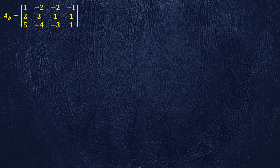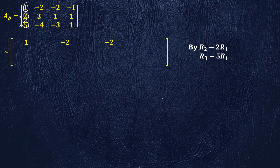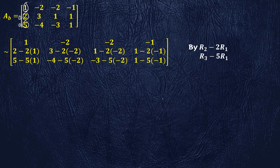We apply elementary row operations to convert the augmented matrix into echelon form. We note that the first non-zero element in the first row is 1. We transform the elements below this non-zero element into zeros. For this, we multiply row 1 by 2 and subtract from row 2, and again multiply R1 by 5 and subtract it from R3. After performing these row operations, we are left with the transformed augmented matrix.